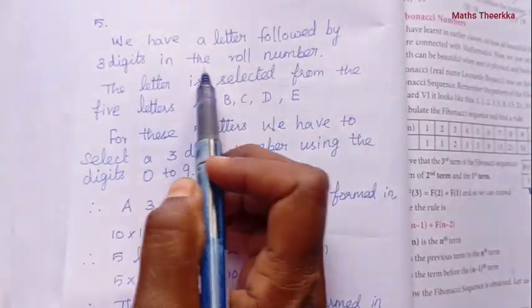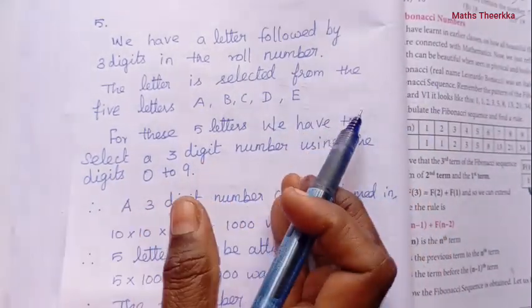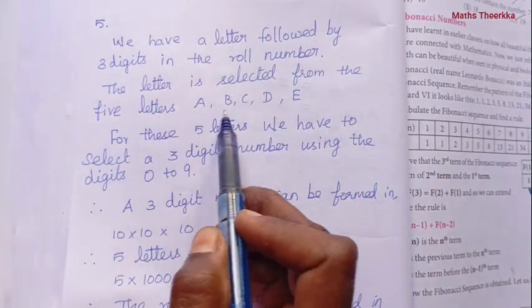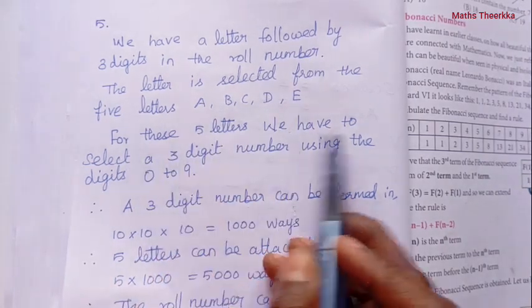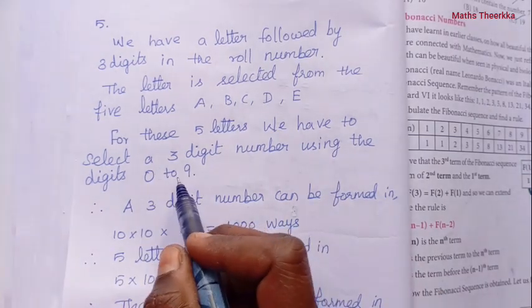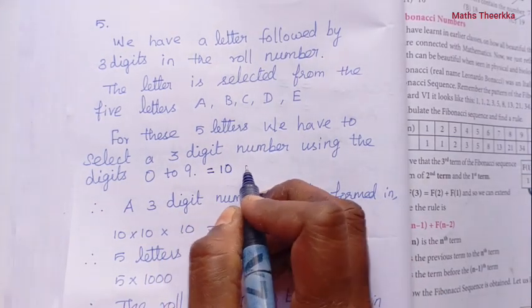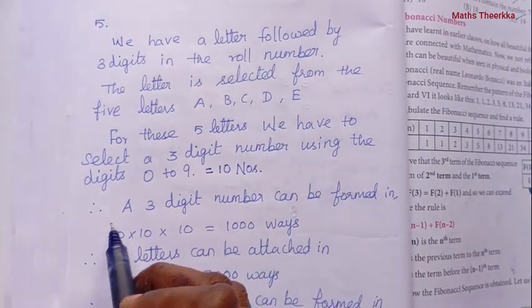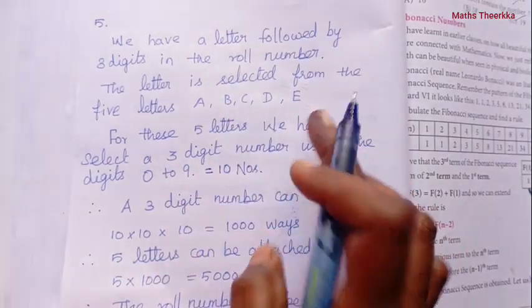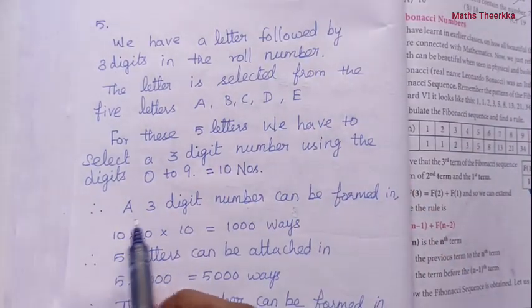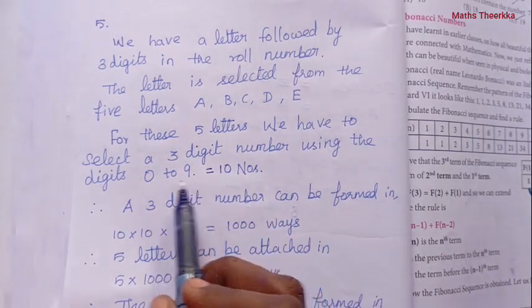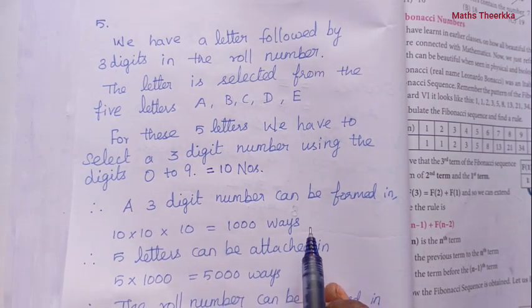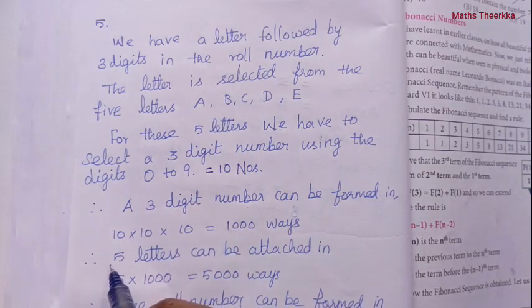Fifth question: A roll number has a letter followed by three digits. The letter is selected from five letters A, B, C, D, E. The three digits are selected from 0 to 9, which is 10 numbers. So three-digit numbers can be formed in 10 × 10 × 10 = 1,000 ways. With 5 letters, the roll number can be formed in 5 × 1,000 = 5,000 ways.